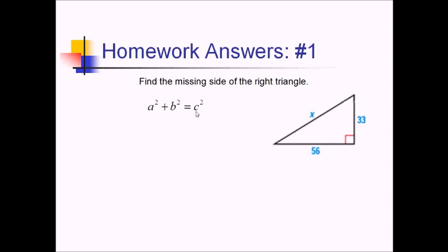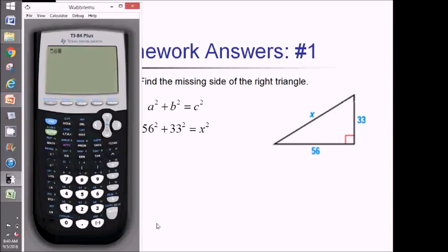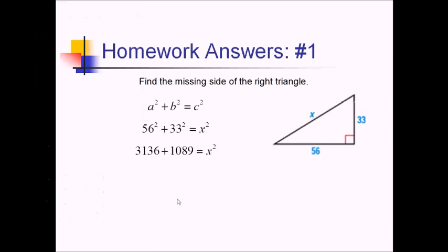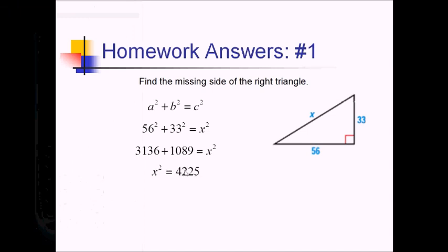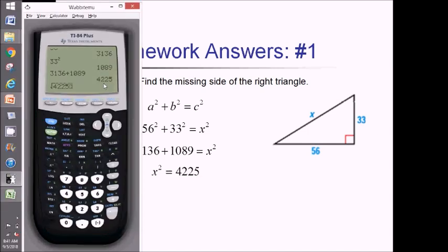The c side, the hypotenuse, is going to be x, so we'll have 33 squared plus 56 squared equals x squared. Let's square these on our calculator. 56 squared is 3136, 33 squared is 1089. If we add those together, that comes out to 4225, and we'll just square root that now, which gives us a final answer of 65.